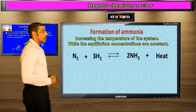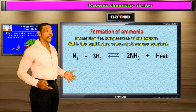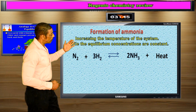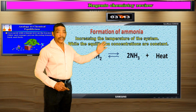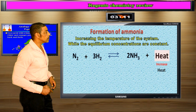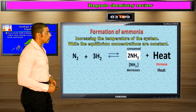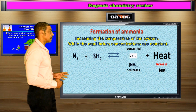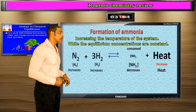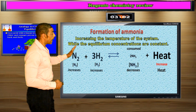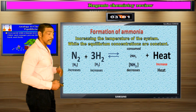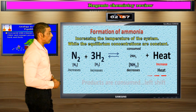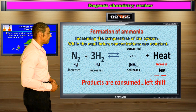Increasing the temperature, or heat, while holding all of the concentrations of the chemical species constant. Increasing heat will consume NH3, causing its concentration to decrease. This will cause the concentration of the reactants to increase. This is called a left shift.